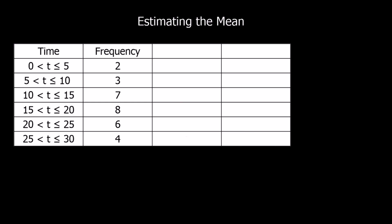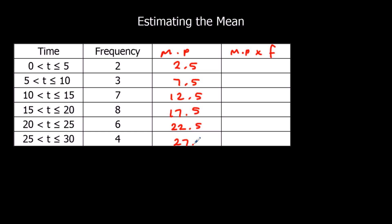Here's another estimate-the-mean question — pause the video and see if you can do this one. We're going to do midpoint, then midpoint times frequency. The midpoints, halfway between each group, should be: 2.5, 7.5, 12.5, 17.5, 22.5, and 27.5.